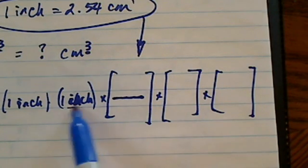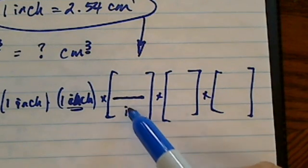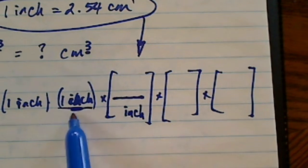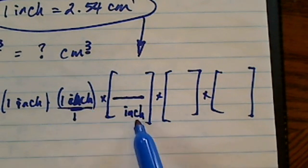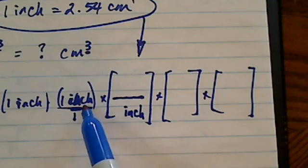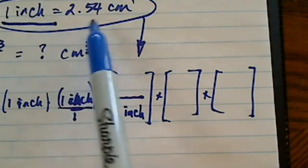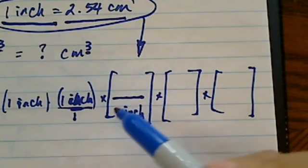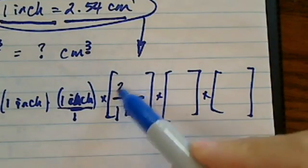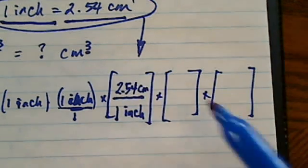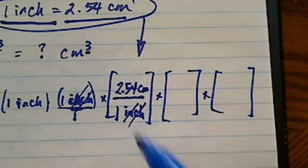The inch is the one we don't want. So you always put the things you don't want diagonally from where you have. One inch is on the top, so I want an inch on the bottom because the inch started on the top. Now from our conversion factor here, I said one inch is equal to 2.54. One inch is 2.54 centimeters. That allows me to get rid of one of the inch.